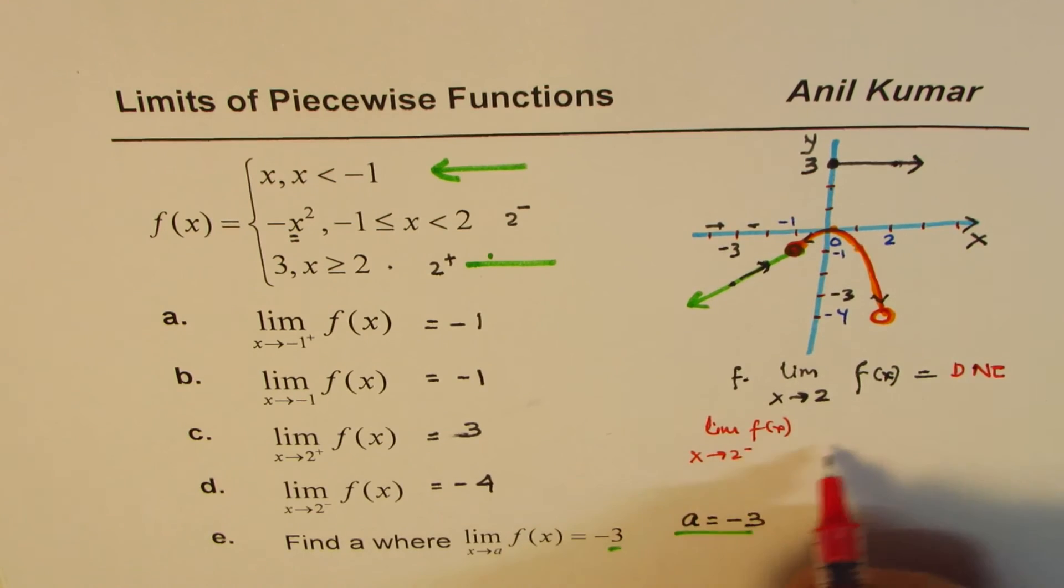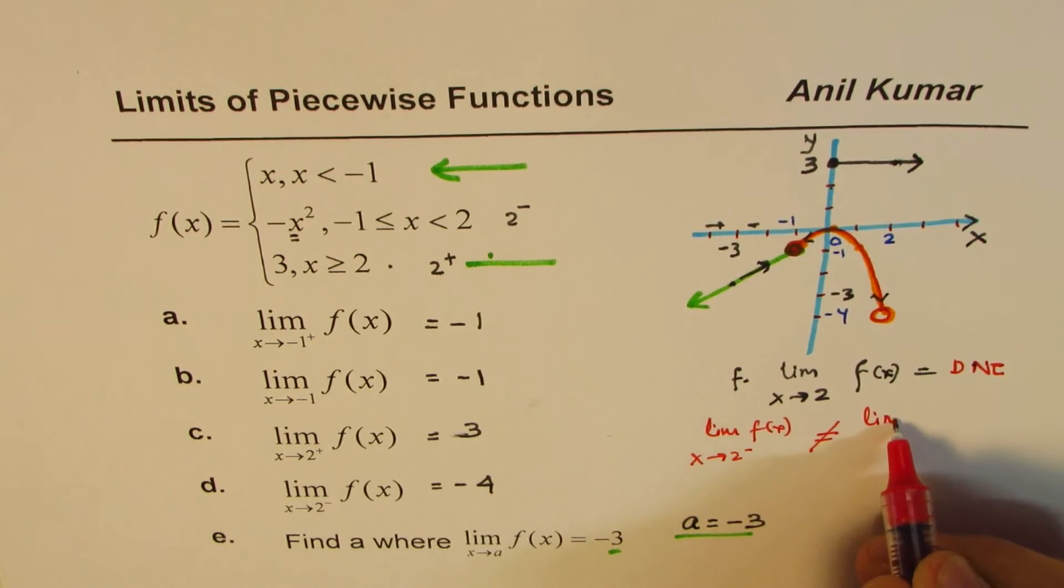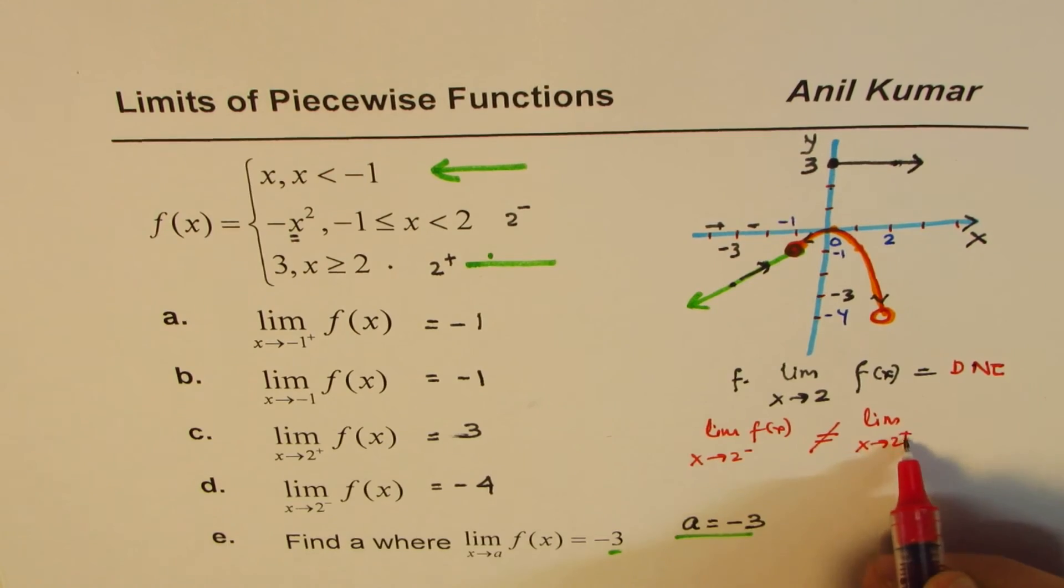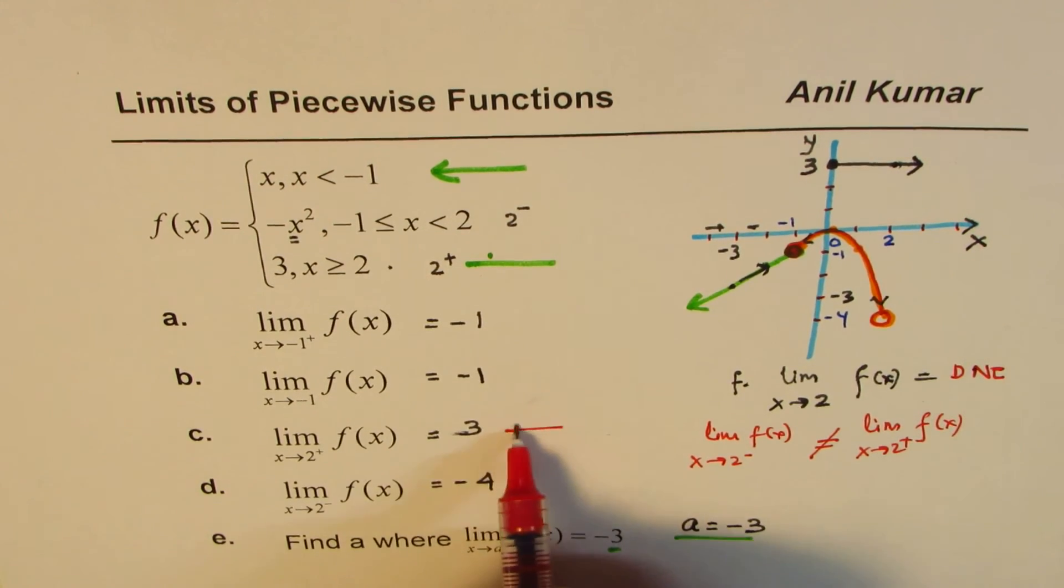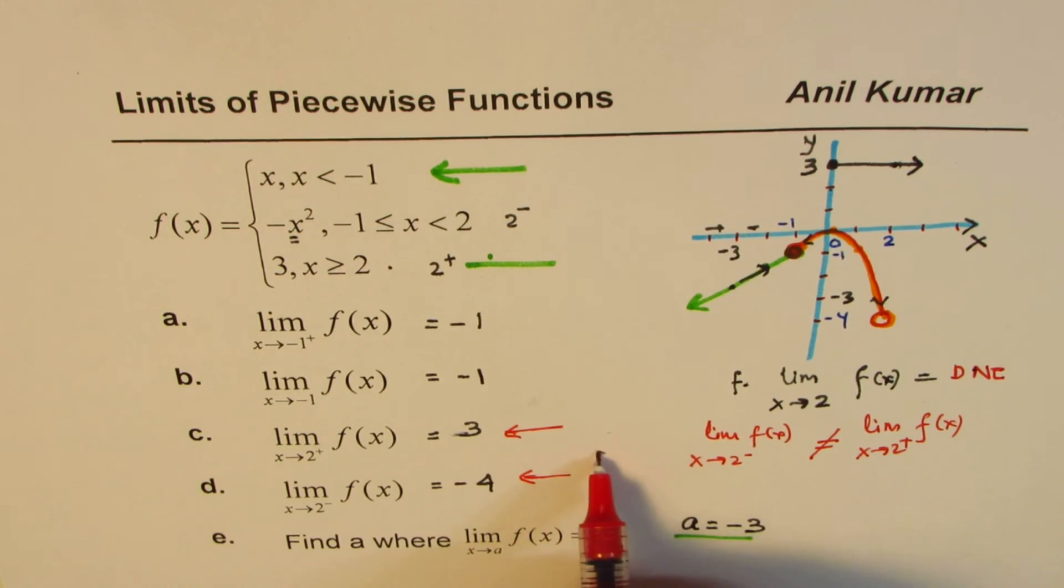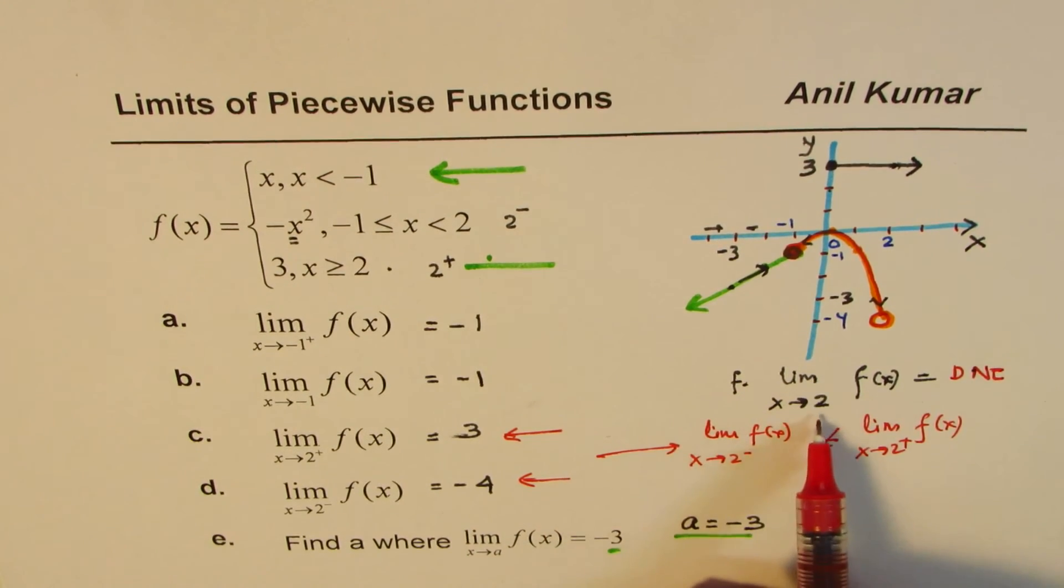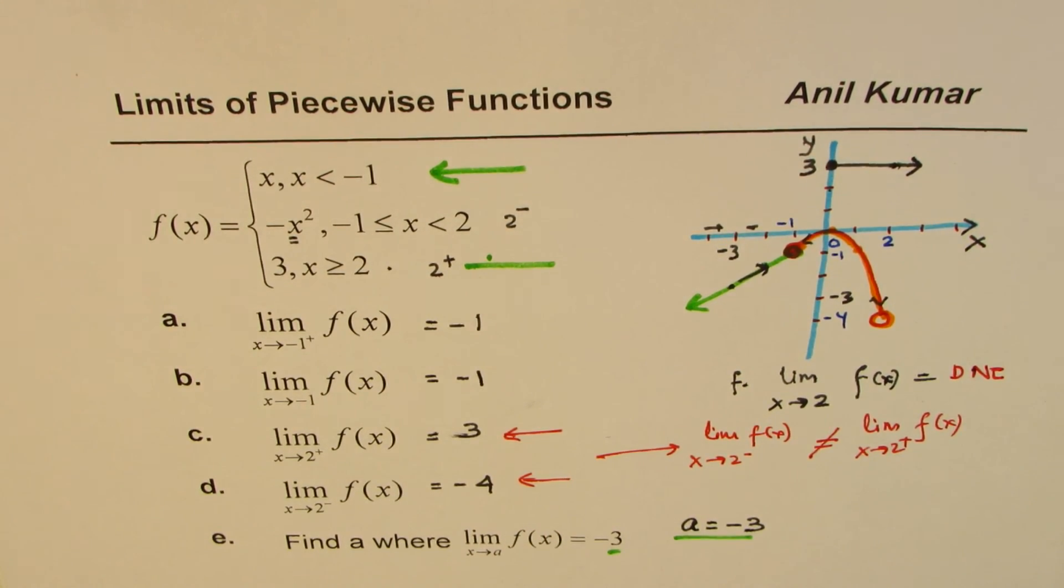limit of f(x) when x approaches 2 from the negative side is not equal to limit when x approaches 2 from the positive side for the function, right? You have seen that both these limits are indeed different. And that means that limit at 2 does not exist.